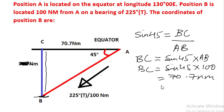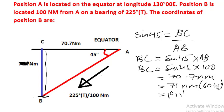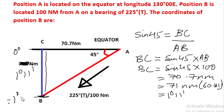BC is equal to sine 45 into 100, which equals 70.7 nautical miles. We round it off to 71 nautical miles, which equals 1 degree 11 minutes. The equatorial line is 0 degrees, and from 0 degrees we start going 1 degree 11 minutes to the south. So the latitude of B is equal to 1 degree 11 minutes south.